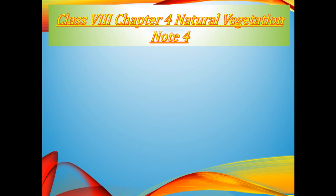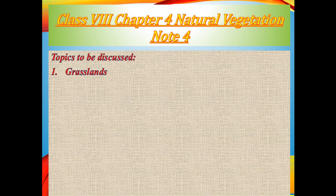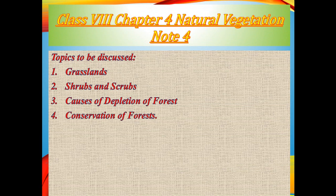Hello students, welcome to online classes of geography for class eight. This is the fourth class of chapter number four, Natural Vegetation. The entire class is divided under four subtopics: grasslands, shrubs and scrubs related to hot and cold deserts, causes of depletion of forests, and how we can conserve forests.